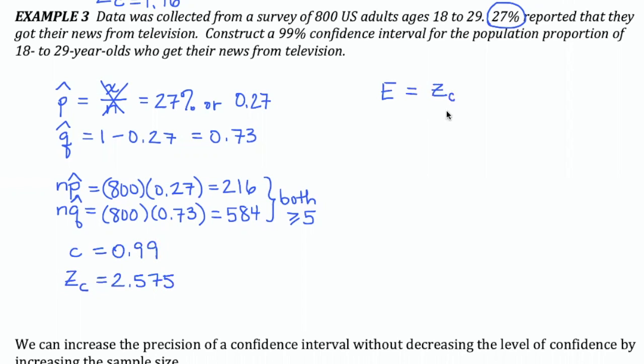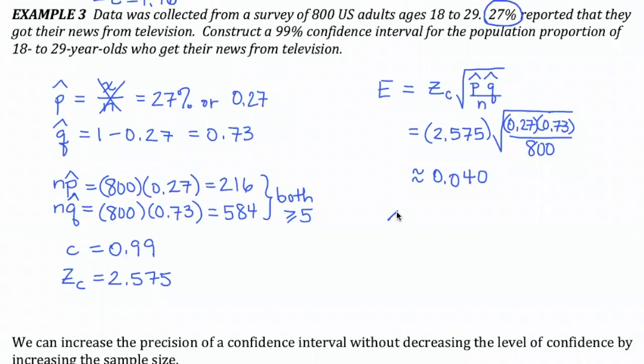I would next go to my margin of error formula, again the one for this binomial probability proportion, substitute in my values. And again, it's a useful exercise for you to pick up whatever calculator you're using and make sure that you can type this in and get the proper answer, which should be approximately 0.040.